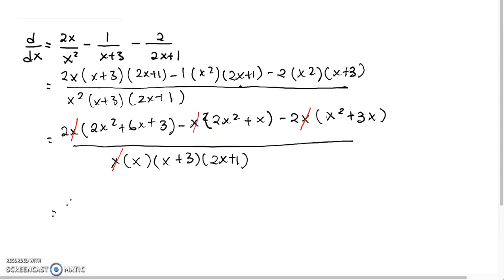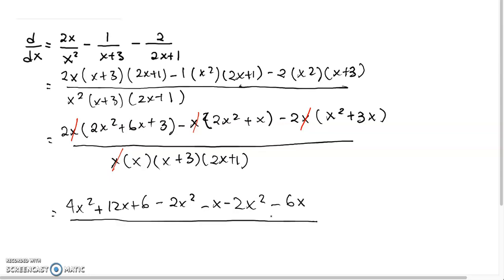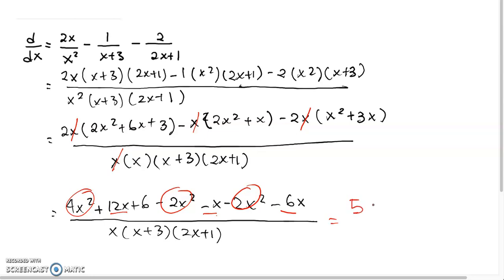Continuing the simplification, expanding gives 4x-squared plus 12x plus 6, minus 2x-squared minus x, minus 2x-squared minus 6x, all divided by x(x+3)(2x+1). The 4x², −2x², and −2x² terms cancel out. We have 12x minus 6x minus x, which is 5x, plus 6, giving us 5x+6 over x(x+3)(2x+1).